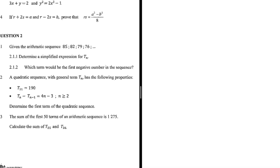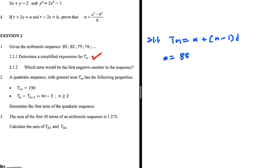For 2.1.1, we want tn for an arithmetic sequence. We'll use the formula tn = a + (n-1) × d, where a is the first term — which is 85 — and d is the common difference.